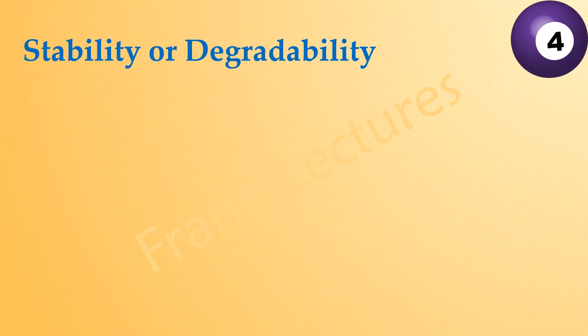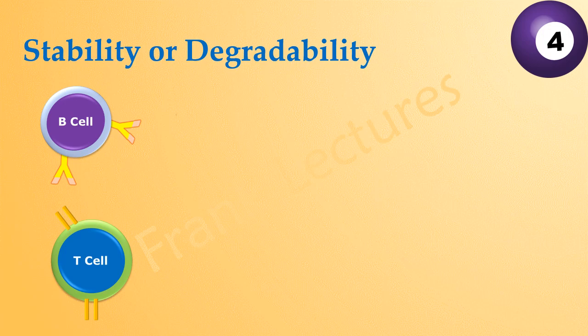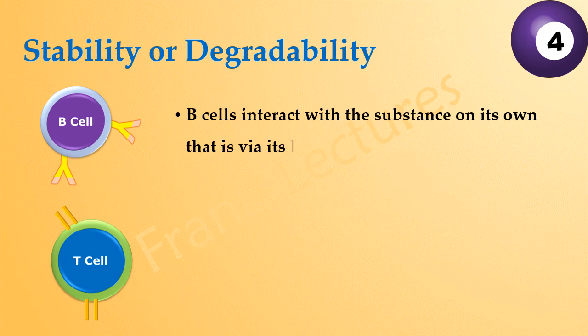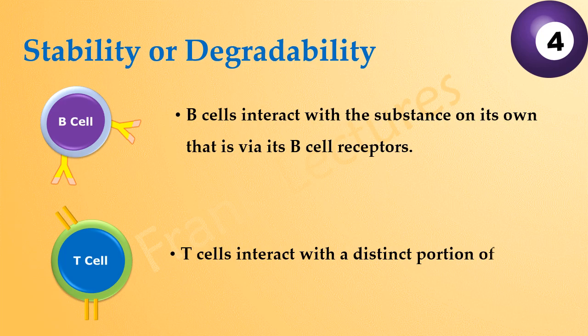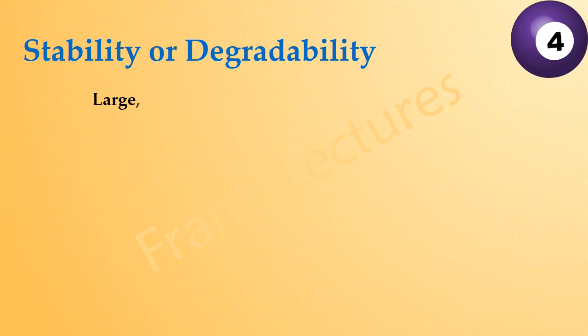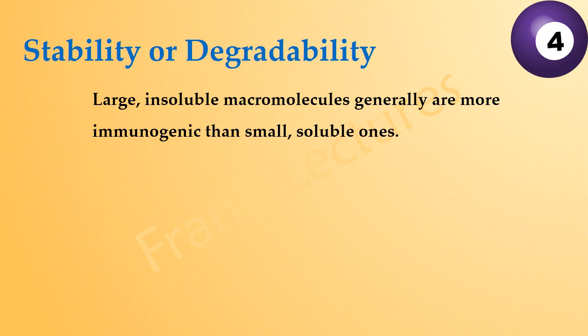The final property of immunogenicity is stability or degradability. To stimulate an immune response, a substance should bind with B cell receptors or T cell receptors. B cells interact with the substance directly via their B cell receptors, but T cell receptors interact with a distinct portion of the substance — short peptides that result from antigen processing and presentation, which we will study later. Large insoluble macromolecules are generally more immunogenic than small soluble ones, because larger molecules are more readily degraded, processed, and presented to the immune system. This also explains why proteins are excellent immunogens.